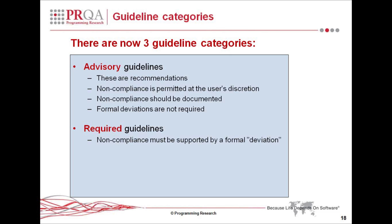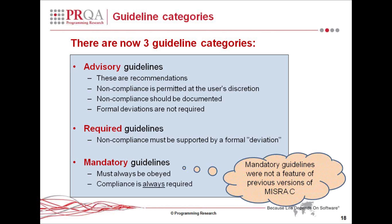In MISRA 2012, we've introduced a third category of guideline: what we call a mandatory guideline. The principle here is that there are certain guidelines which are so fundamental and so non-controversial that they are considered to be things that cannot be avoided — guidelines which must always be obeyed; compliance is always required. Most mandatory guidelines are things for which there should never be a need to produce a deviation.